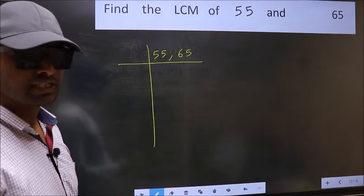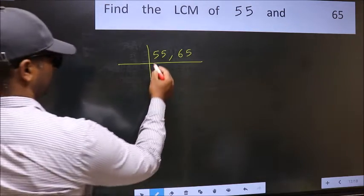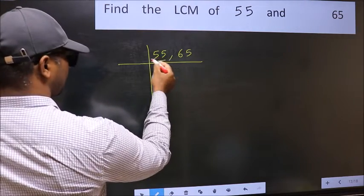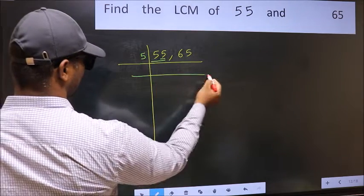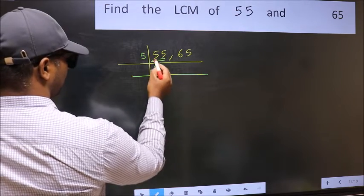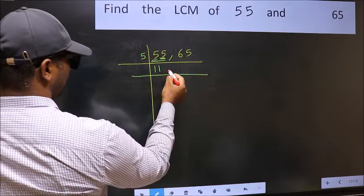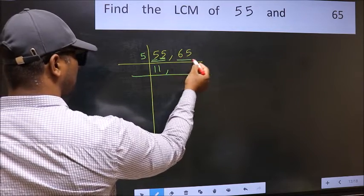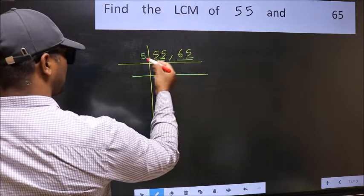Now focus on the first number, which is 55. In this number, the last digit is 5, so take 5. First number 5: when do we get 5 in the 5 table? 5 once 5. The other number 5: when do we get 5 in the 5 table? 5 once 5. The other number 65, last digit 5, so this is divisible by 5.